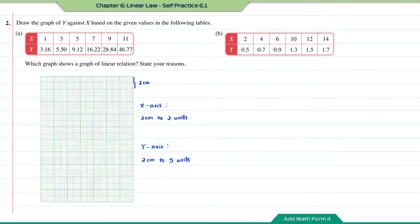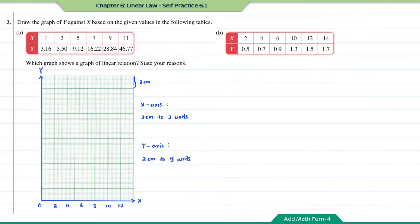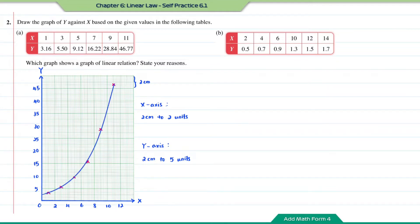Now let us plot the scale and then plot the points given in the table into the graph. When you connect all the points together in graph A, the shape of the graph is a curve. Therefore, graph A is not a graph of linear relations.